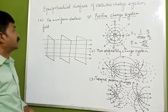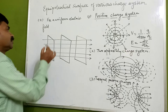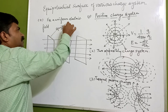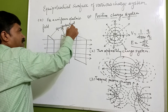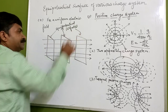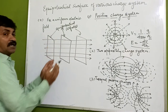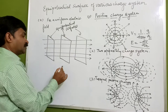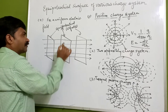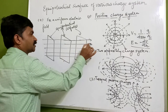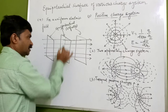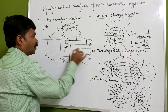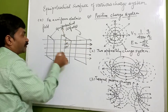Now for a uniform electric field, these are the equipotential surfaces — they are parallel to each other and equally spaced. The electric field lines coming out are perpendicular to these surfaces, making a 90-degree angle with them. So the electric field is always normal to the equipotential surfaces.